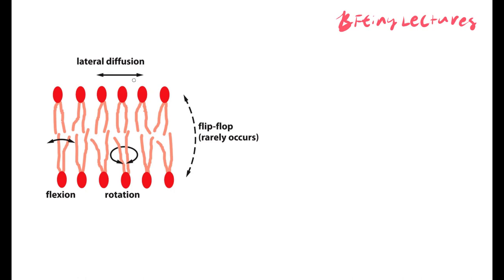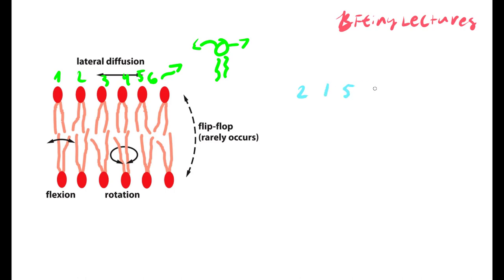Within the lipid bilayer, there is some movement — phospholipids can vibrate and move from left to right, and they can change positions laterally within their own layer. One thing that almost never happens without an enzyme is a lipid flipping to the other side of the bilayer.